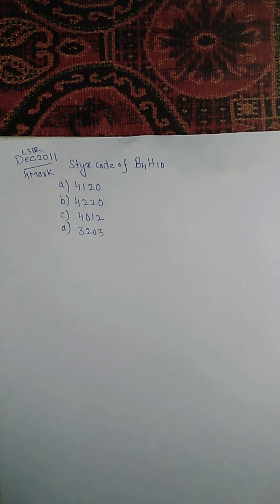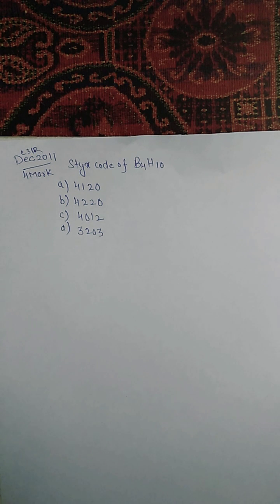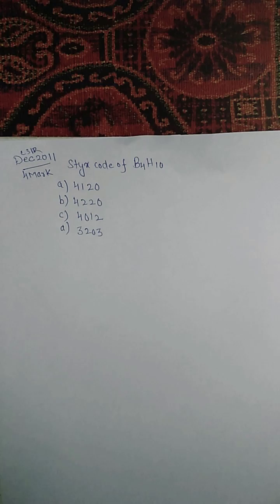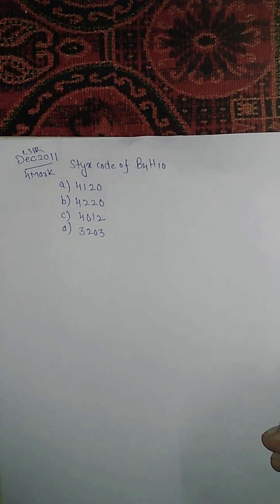Hello everyone, this is a problem from a December 2011 marker. We are asked to calculate the SETX code of B4H10. We can solve this question just by looking at the options. Let's start with B4H10. Add the number of boron and hydrogen atoms: 4 plus 10.